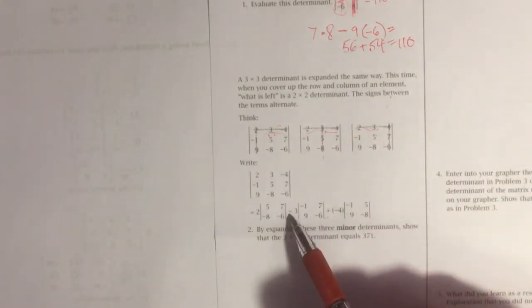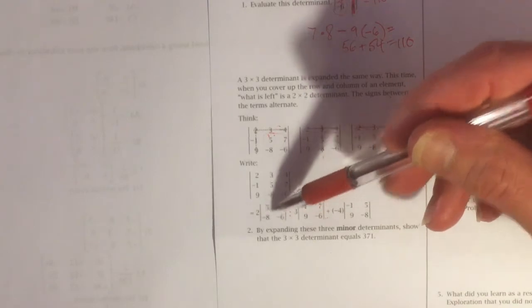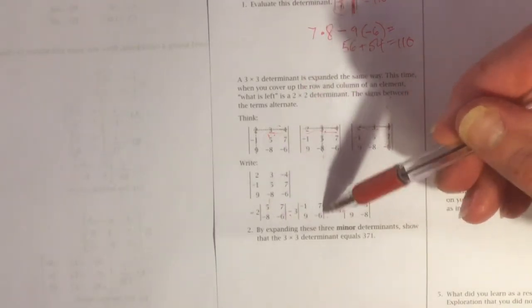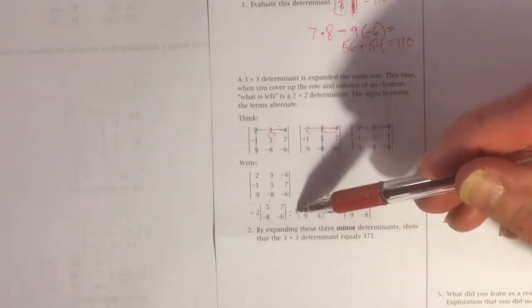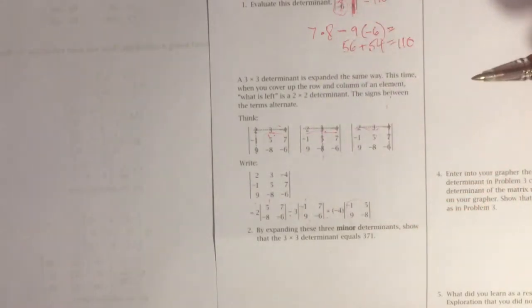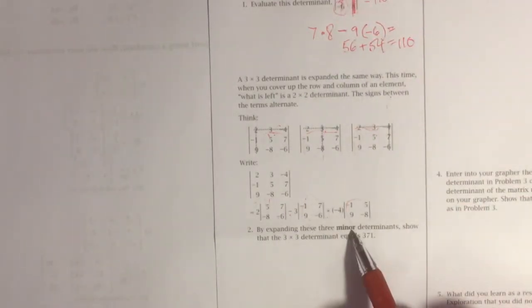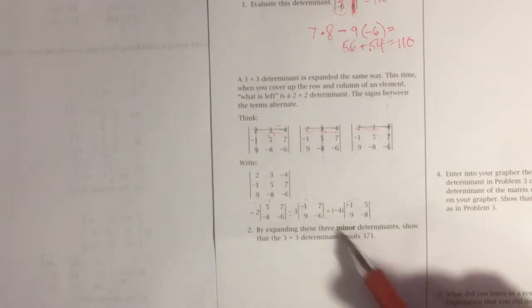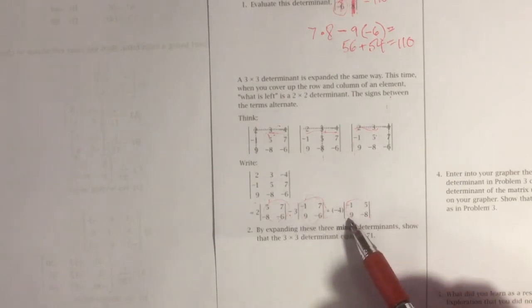And they put a negative sign here, and they alternate negative, positive, negative, positive. So they put a positive sign here. Now what's required is to get the determinant of this, the determinant of this, and the determinant of this, multiply them together, and subtract or add as you're told to do. This is called expanding the minor determinants. These are the minor determinants from the original matrix. And they already tell you that the 3 by 3 determinant is equal to 371.